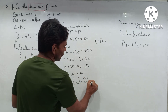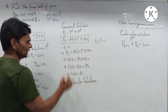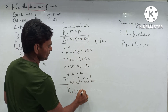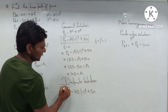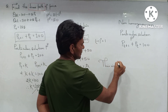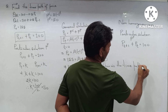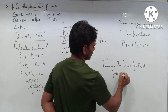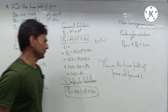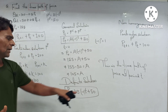The definite solution is obtained by substituting the value of A into the general solution. Substituting A = 105: p(t) = 105·(-1)^t + 50. This is the definite solution, and this is also the time path of price at period t.